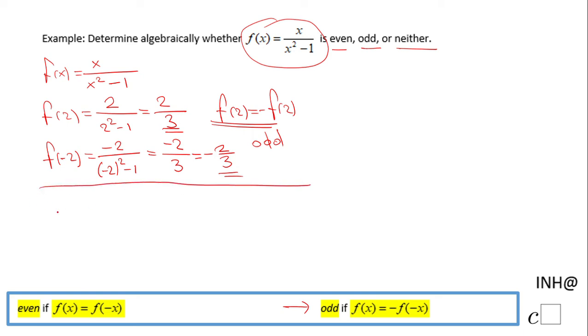Now let's look at the algebraic process. I'm going to evaluate f(-x), which in our case would be -x/((-x)² - 1). This becomes -x/(x² - 1).